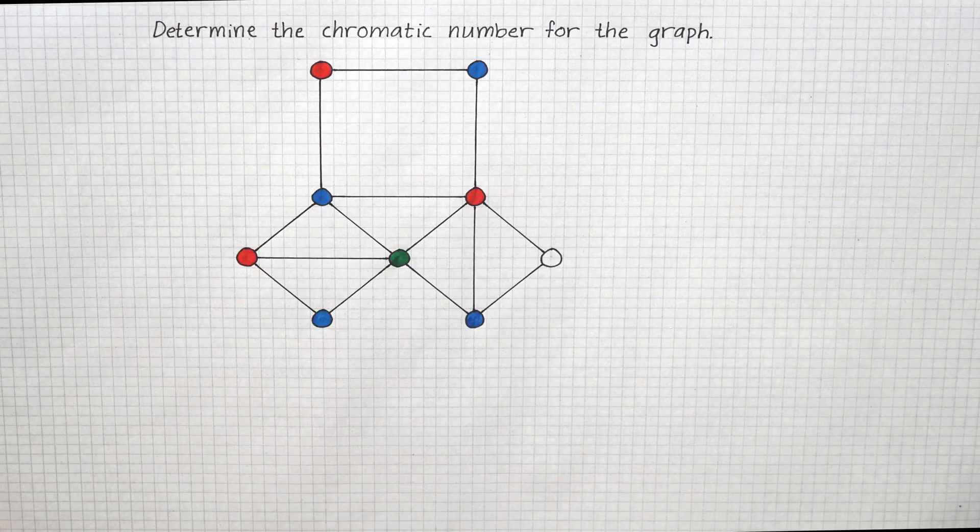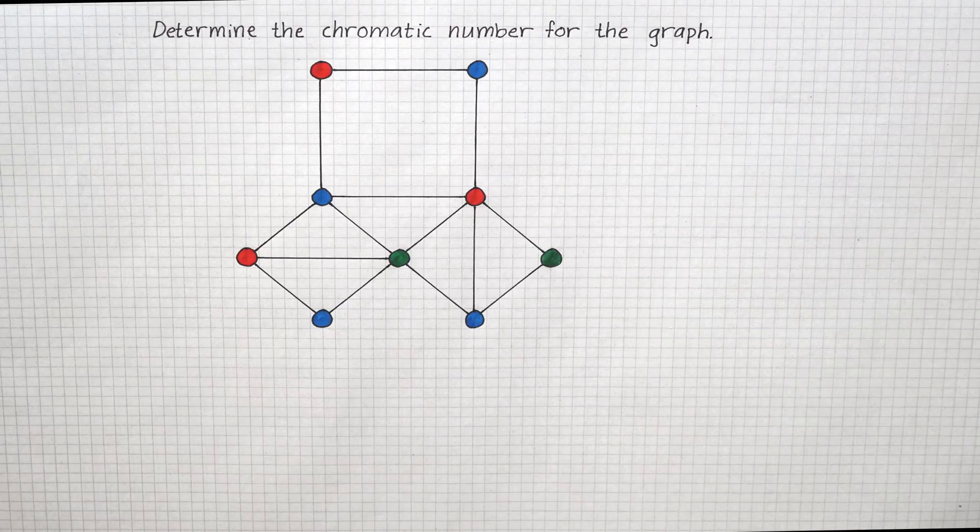And for the last one, our only option is green because it has edges to red and blue. By doing this we've concluded that the minimal number of colors to use so that no vertex has edges to another vertex with the same color is three.